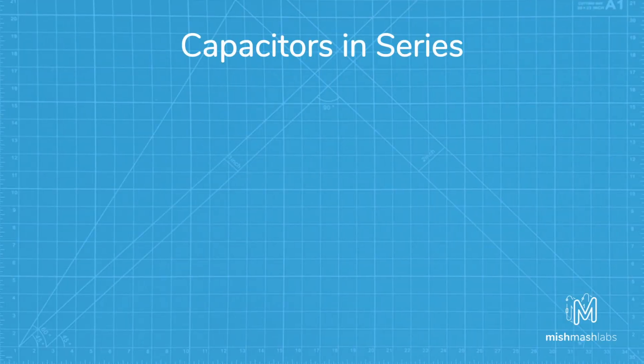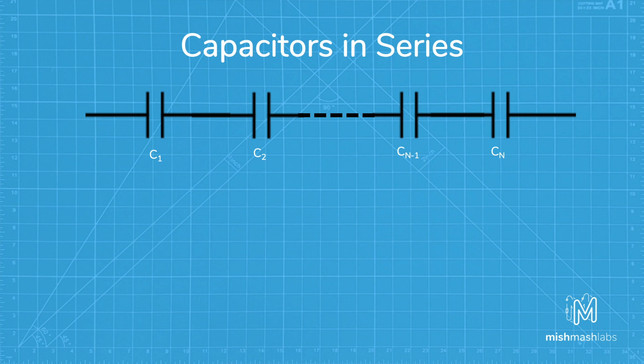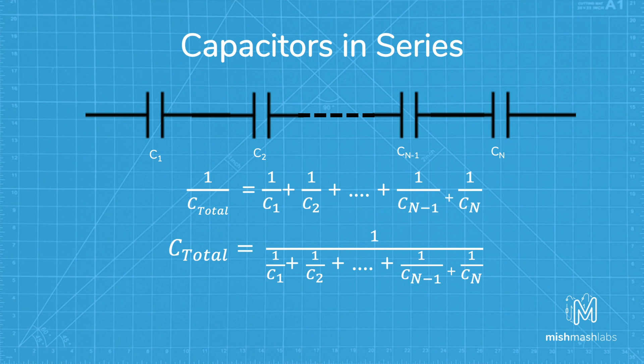We sum capacitors in series much like resistors in parallel. The inverse capacitance total is the sum of all the inverse capacitances, which simplifies to the total capacitance in series is the inverse sum of all the inverse capacitors.